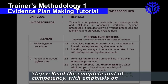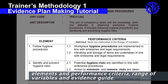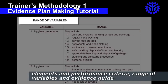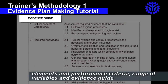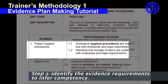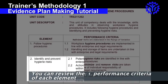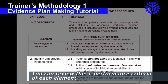Step 2: Read the Complete Unit of Competency with emphasis on Elements and Performance Criteria, Range of Variables, and Evidence Guide. Identify the Evidence Requirements to infer competency. You can review the performance criteria of each element.